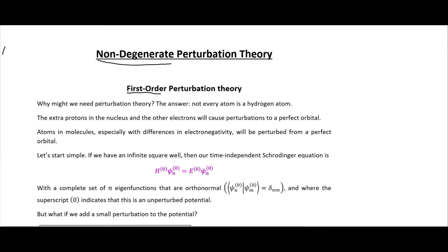So why might we need perturbation theory? The reason is not every atom is a hydrogen atom. Quantum mechanics is really good at solving for a hydrogen atom, which has a single proton and a single electron. But when you add more protons and electrons, those things start interacting with each other and perturbing the potential. We want to take the ideal hydrogen atom and perturb it — for example, moving to a helium atom with two protons and two electrons.